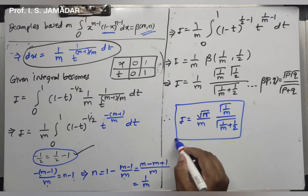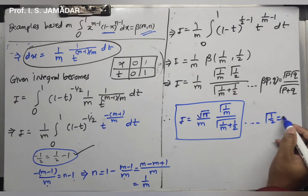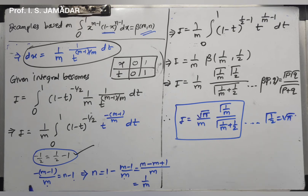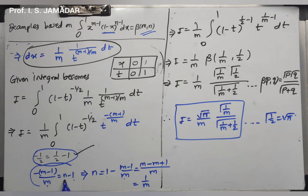This is the final answer for example 3. Always take care to express the power in the form of (n minus 1) and find the corresponding n using the logic shown, to avoid mistakes when applying the beta function definition.